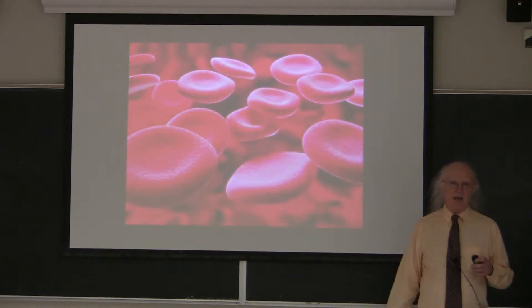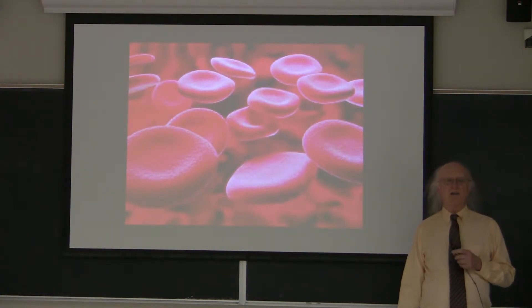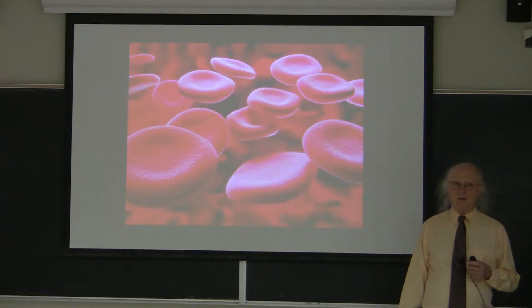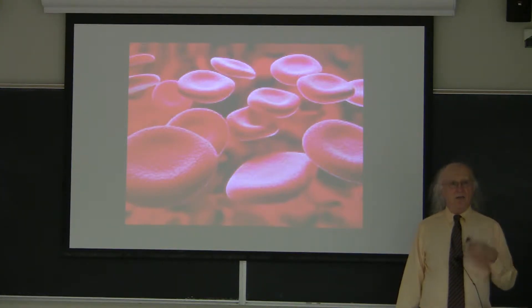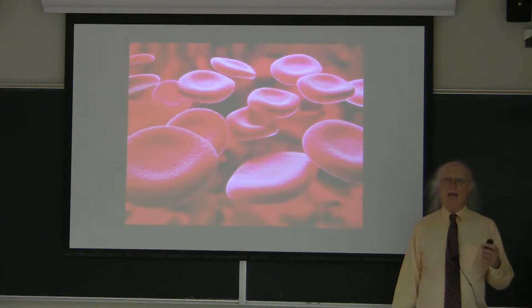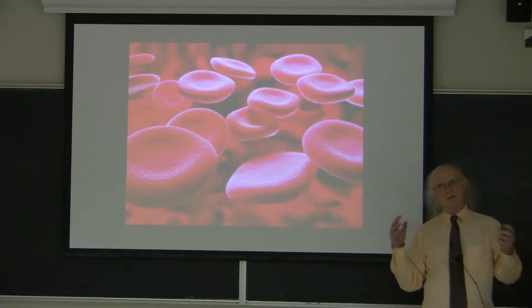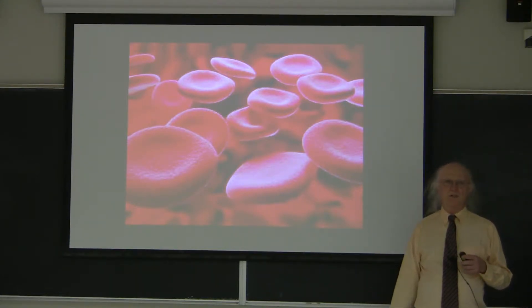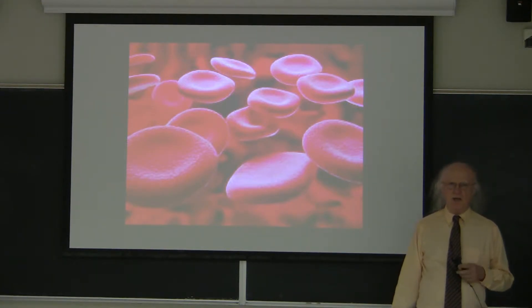Hemoglobin we think of as the protein that carries oxygen from our lungs, where the oxygen concentration is high, to the tissues where the oxygen concentration is lower. Hemoglobin is able to accomplish the delivery of oxygen as needed to places in the body as a result of the structure that it has. Before I talk about the hemoglobin structure and the role that its structure has in its function, I want to say just a few words about structure and function in general.